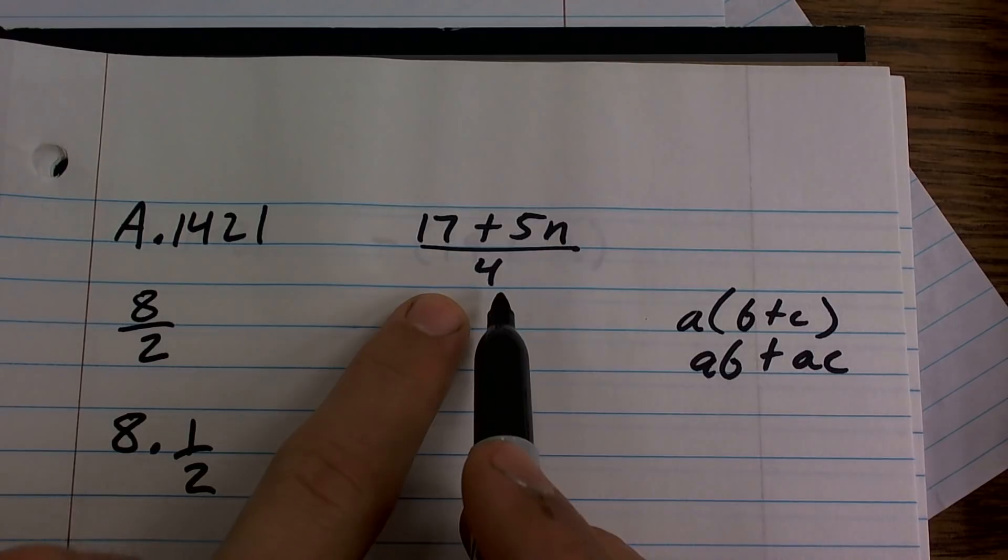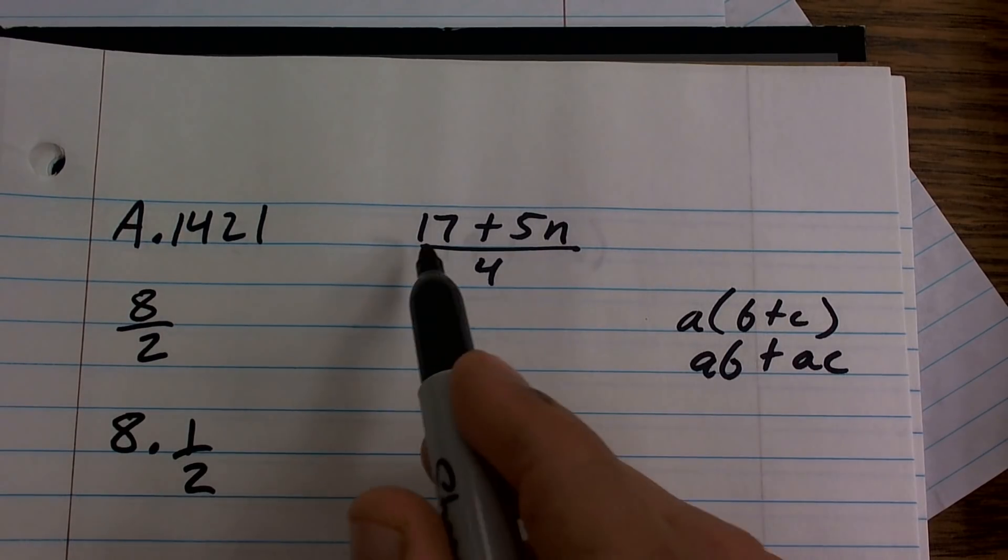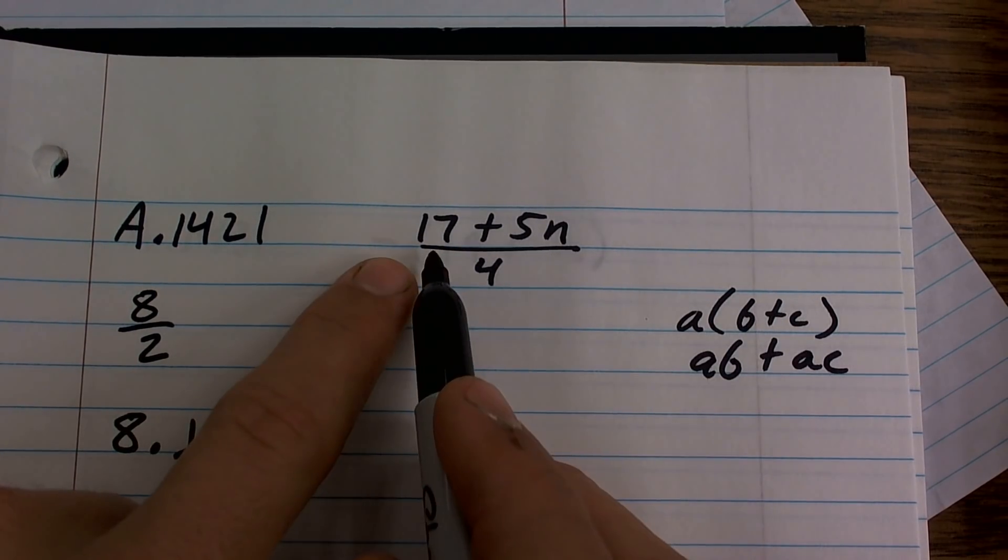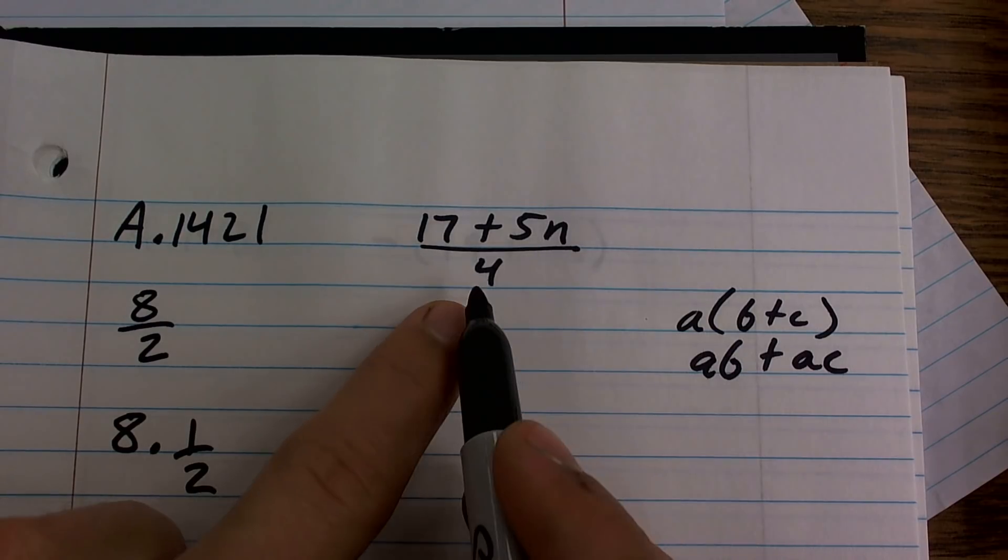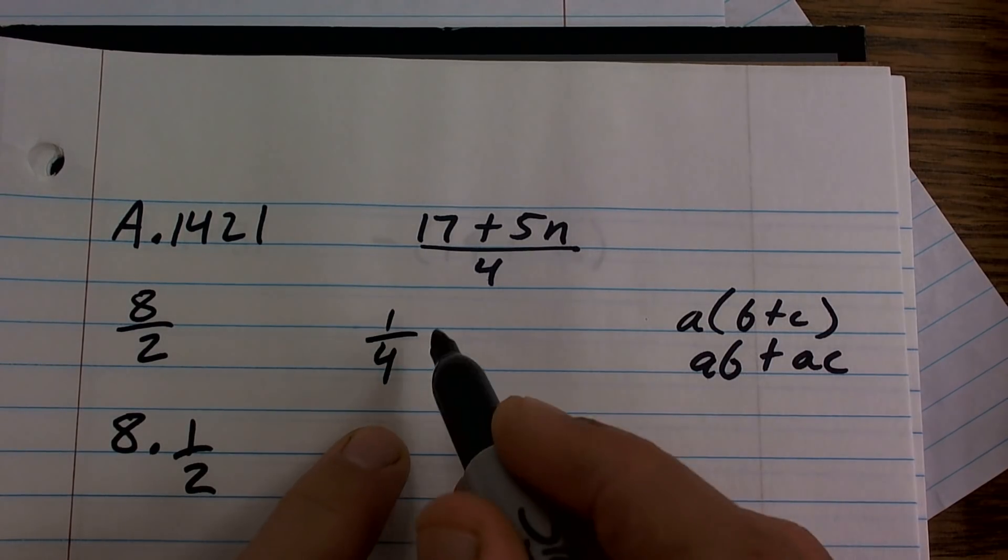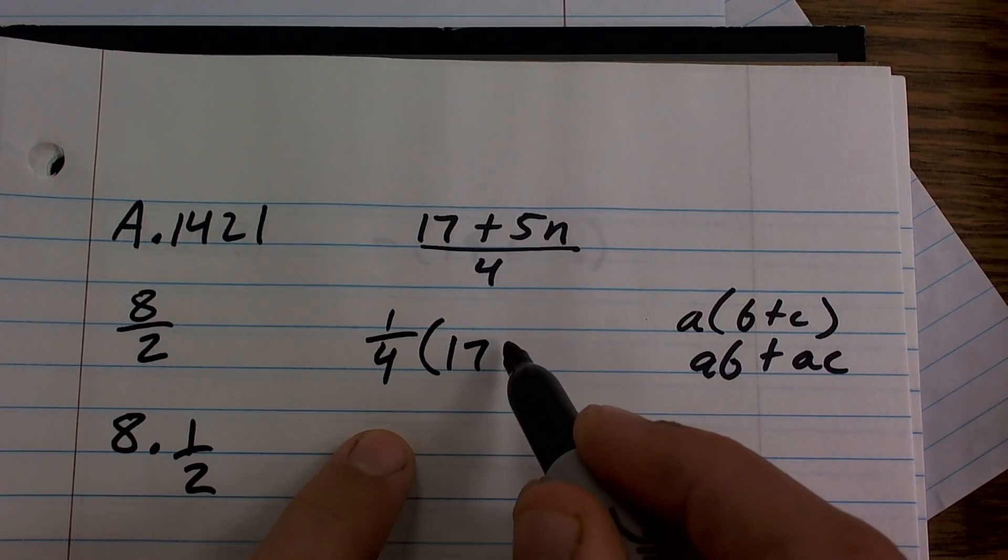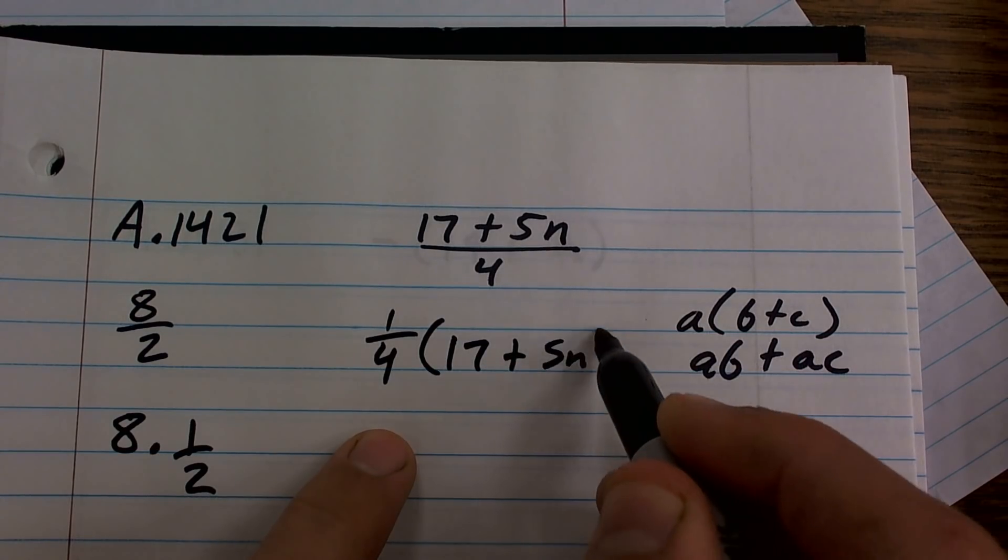So here, since I'm dividing by 4, I'm dividing both of these terms by 4, right? I'm not just multiplying the 17 or just the 5n. I'm multiplying both of these. So what I can say is I can rewrite this as 1 fourth times 17 plus 5n.